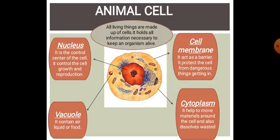Animal cells: all living things are made up of cells, which hold all information necessary to keep an organism alive. Animal cells are divided into four parts: nucleus, cell membrane, vacuole, and cytoplasm.